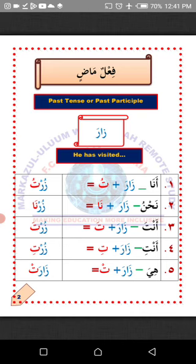Number three — Anta, meaning you, representing a single male person. To change the verb Zara to suit Anta, attach Ta'un with Fatha to the last letter, then give Sukun to the letter before it. So the verb Zara will now become Zorta, which means 'you have visited.'